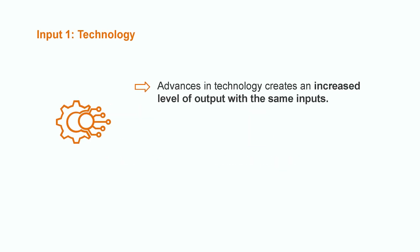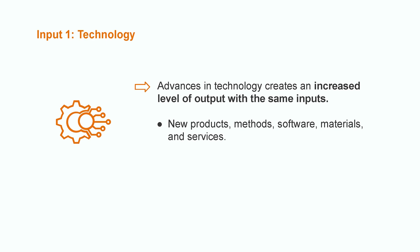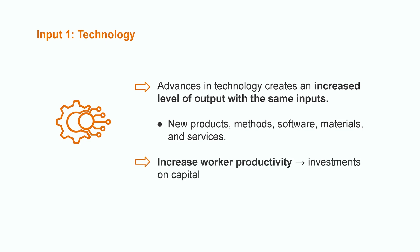Let's start with technology. Technology can cause innovations that create an increased level of output with the same inputs — that is what we call an increase in productivity. That could be stimulated through the development of new products, methods, software, materials and services. Another way would be to improve worker productivity. Worker productivity can increase with investments on capital, for example, better machinery.